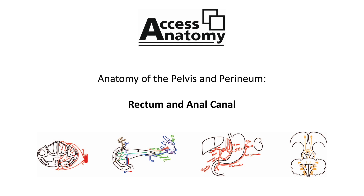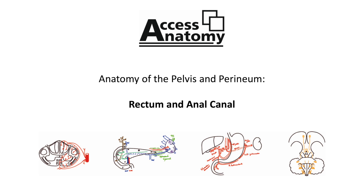Internally, the upper two centimetres of the anal canal is characterized by a series of anal columns. The superior limit of these columns is the anorectal junction, whilst the inferior ends of the anal columns are anal valves. These anal valves are associated with anal sinuses, which produce mucus that aids the passage of faeces through the anal canal during defecation. At the inferior limit of the anal columns is an irregular line known as the pectinate line, which separates the superior two centimetres from the inferior two centimetres of the anal canal.